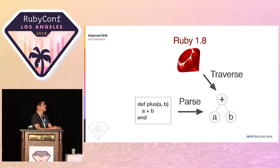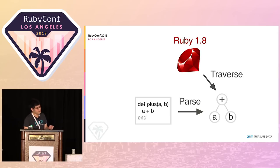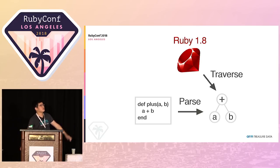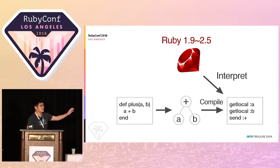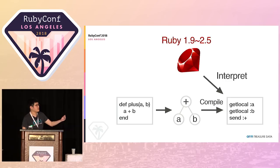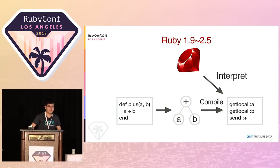Tree traversal is slow if the tree becomes complicated, longer, or deeper. After that, Koichi introduced the Ruby virtual machine, which compiles that tree into sequential instructions. It's much faster than traversing a tree — that is the current implementation in Ruby 2.5.